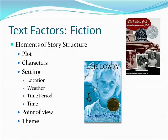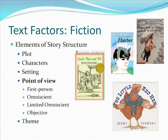Stories are written from a particular point of view, and this perspective determines to a great extent the reader's understanding of the characters and events of a story. There are four points of view: first person, omnipotent, limited omnipotent, and objective. The first person point of view is used to tell a story through the eyes of one character using the first person pronoun 'I.' A good picture book illustrating first person is The True Story of the Three Little Pigs.